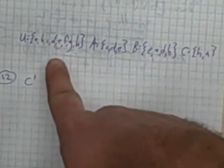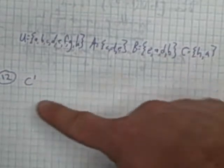Math 125, this is Practice Test 1, question number 12. We have a universe, we have some sets defined, and we're asked to find the complement of C.